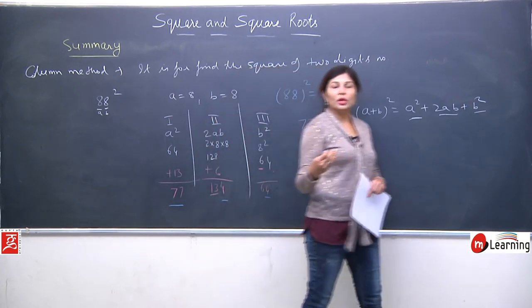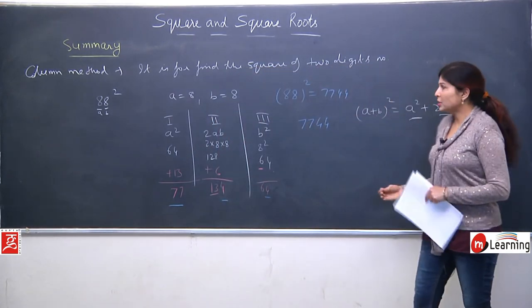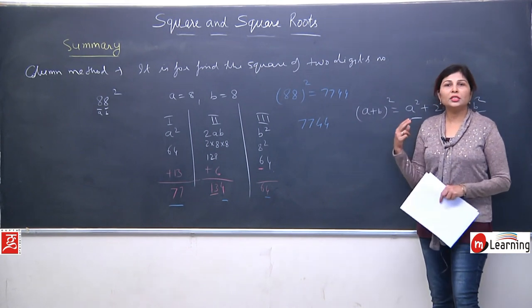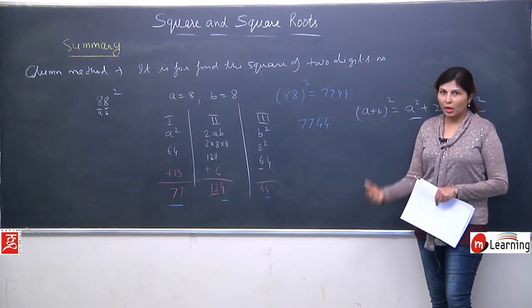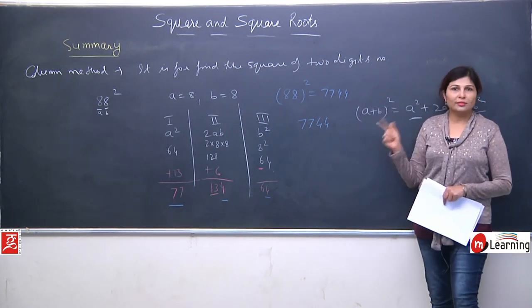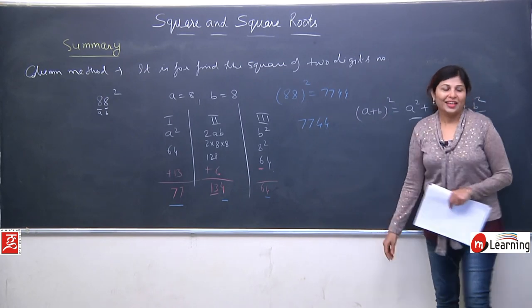This method is very easy. Practice it, and whenever you need to find the square of any two-digit number, you can solve it quickly and accurately using the column method.